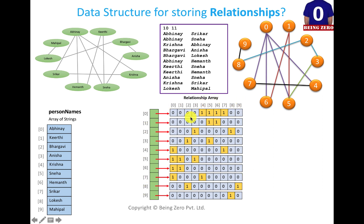If Abhinaya and Shrikar are friends — Abhinaya is 0 and Shrikar is 7 — we go to the 0th row, 7th column and put 1 there. That 1 indicates that 0 and 7 are friends. Similarly, we go to the 7th row, 0th column and mark them as friends. We put 1 wherever people are connected to each other.